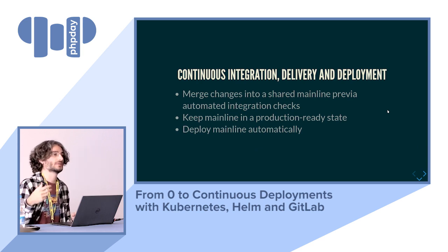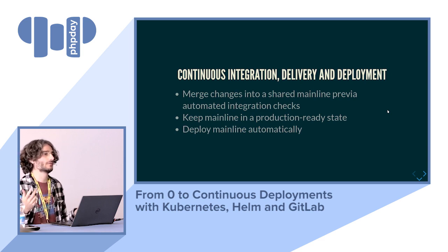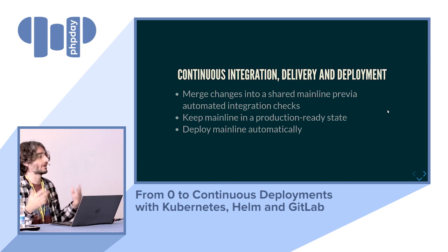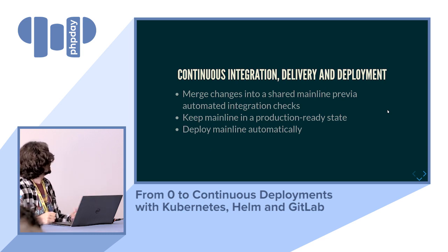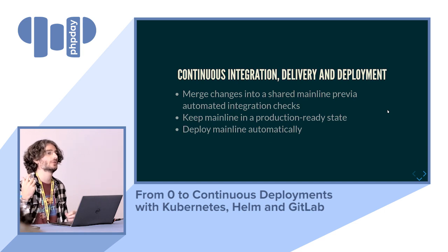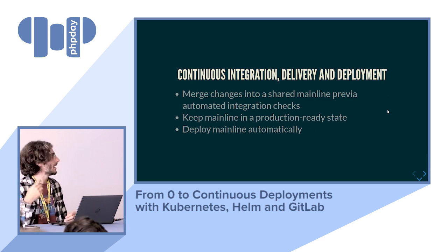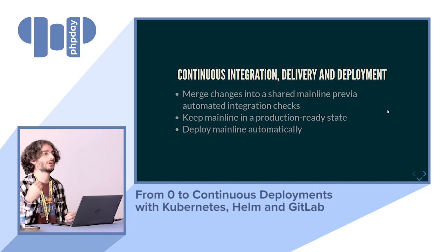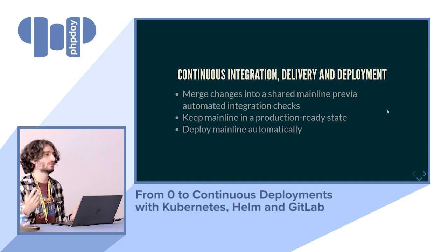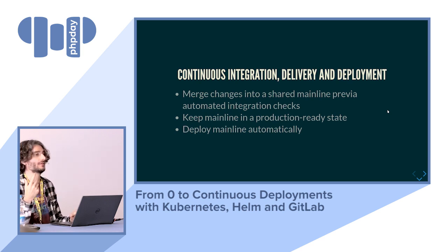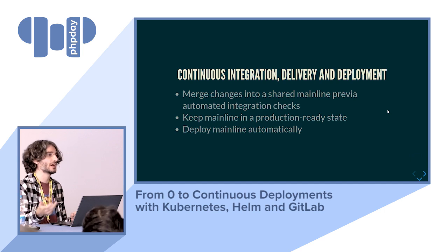The next step further is continuous delivery: keeping your mainline branch — usually your master branch in Git, or back in the day the trunk in SVN — in a production-ready state. You never merge work-in-progress or things not ready for production. If you must deploy incomplete features, you use feature toggles. Your master branch should always be ready to deploy. And the final step is continuous deployment: whenever you merge a change to mainline, it gets deployed automatically to your production environment.